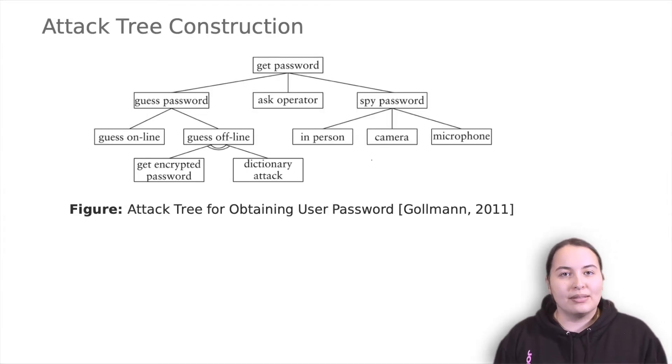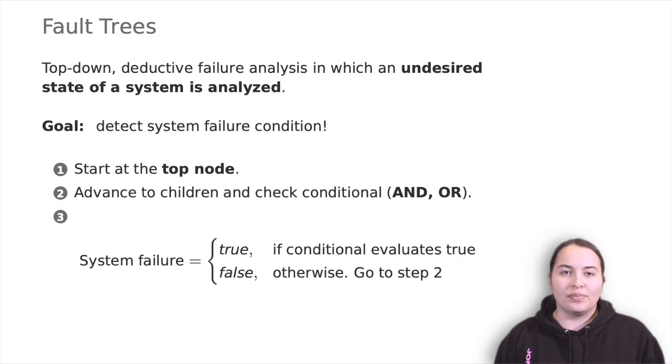Another tree type quite similar to attack trees are fault trees. Fault tree analysis, FTA, is a top-down deductive failure analysis in which an undesired state of a system is analyzed using Boolean logic to combine a series of lower-level events.